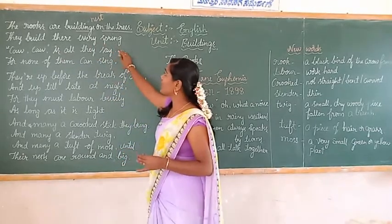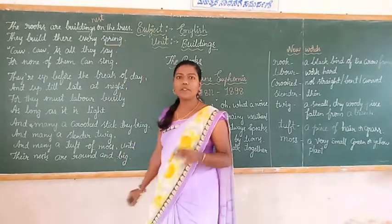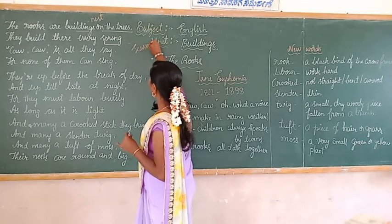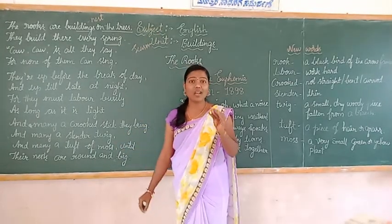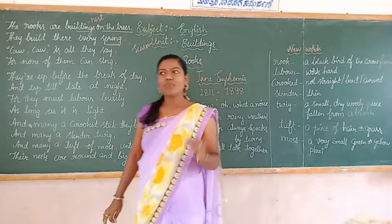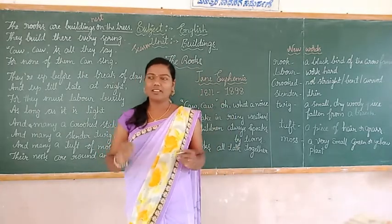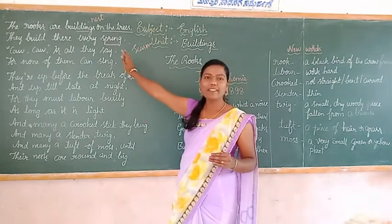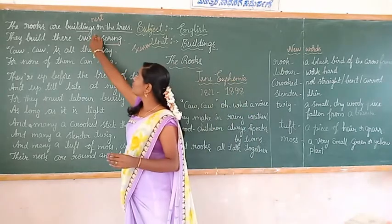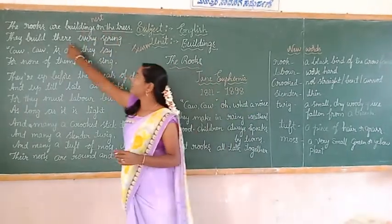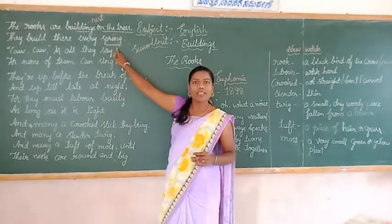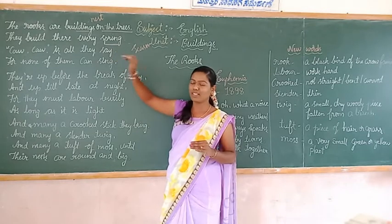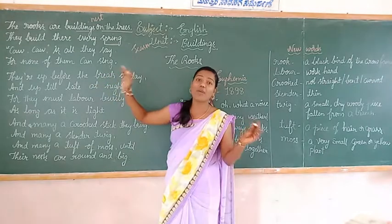They build their nests every spring. What does 'spring' mean? Spring — it is the name of a season. Commonly, birds sing in spring season, and they build their nests on the tree commonly in spring season. So the rooks also build their nests on the tree every spring — that means every spring season, the rooks build their nests.